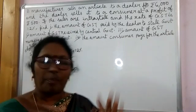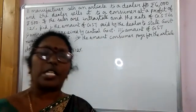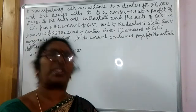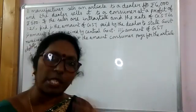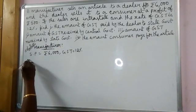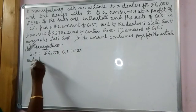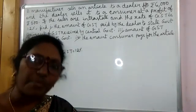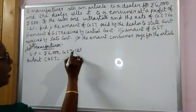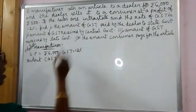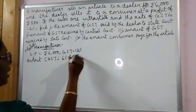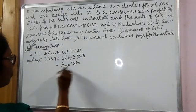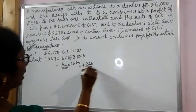For the manufacturer, input tax is zero because his purchase details are not given. So whatever tax he collects, he pays fully to the government. His output CGST is 6 percent of 6000 rupees, which is 360 rupees — collected from the dealer in the form of CGST.